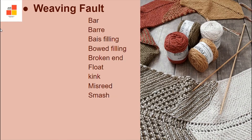Next is weaving fault. The first weaving fault is bar — a distinct shade and change of short duration across the width of fabric. Bare is a visual pattern of continuous bars.